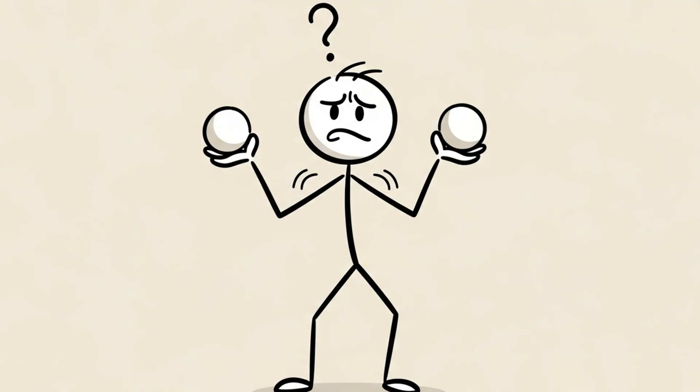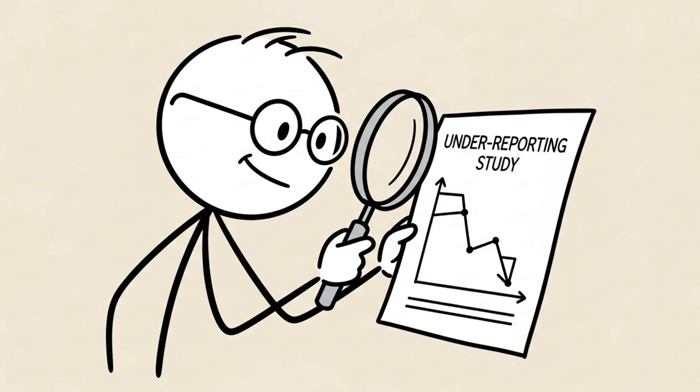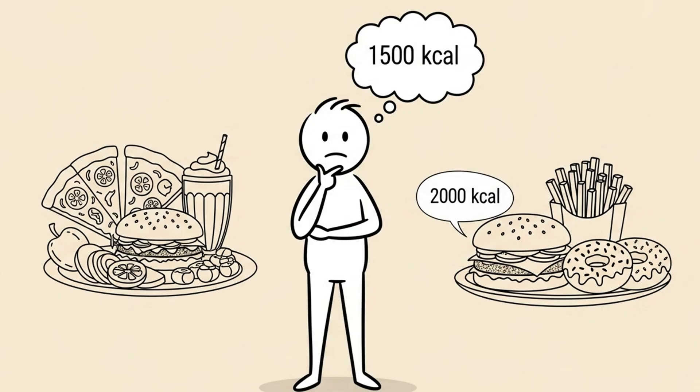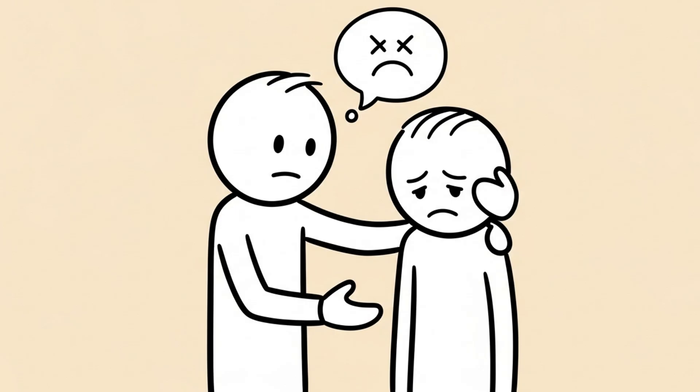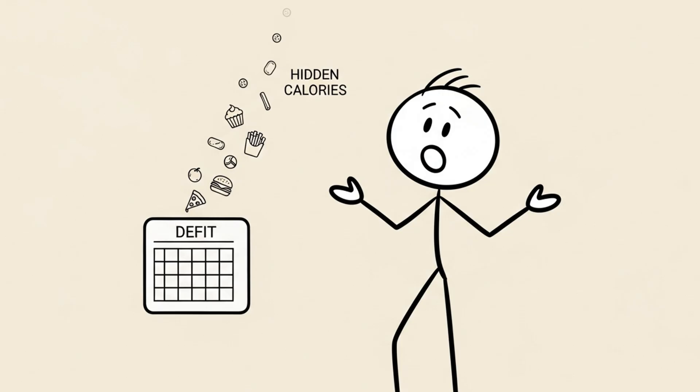We are all, as humans, terrible at estimating. A landmark review in the New England Journal of Medicine found that when people self-report their food intake, they consistently under-report it. On average, participants in diet studies reported eating 400 to 500 calories less than they actually were. And this isn't a moral failure. You're not lying to your app. It's subconscious. It's human nature.